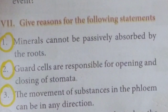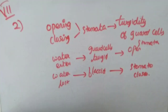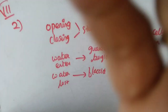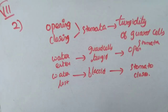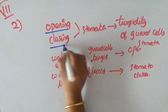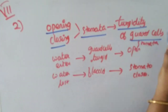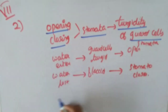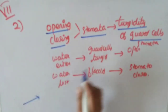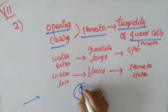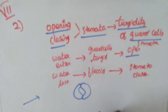Question 2: Guard cells are responsible for the opening and closing of stomata — give reasons. Guard cells control the stomata through turgidity. When water enters the guard cells, they become turgid and the stomata open.